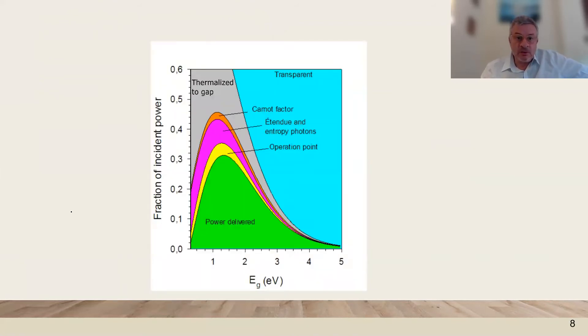Working out these conditions based on these physical principles of the detailed balance, we obtain the two main losses: the transparency and the thermalization. There are additional factors, and the yellow is associated to the fill factor, that is the operation point, and the green is the power that can be extracted.